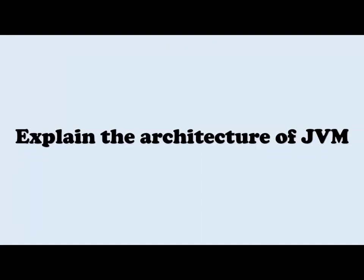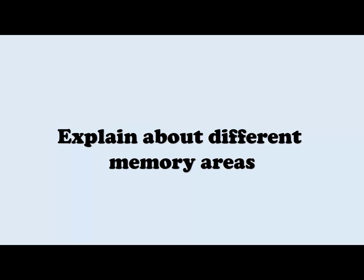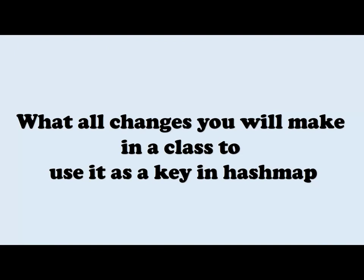The next question was: explain the architecture of the JVM. For experienced candidates with five-plus years, you can expect this type of question. Follow-up questions would include explaining the different memory areas in the JVM. Another question was: what changes would you make in a class to use it as a key in a HashMap? You need to properly override the equals and hashCode methods.